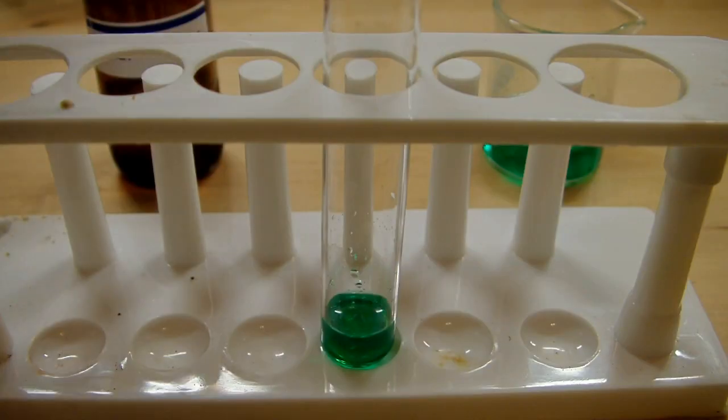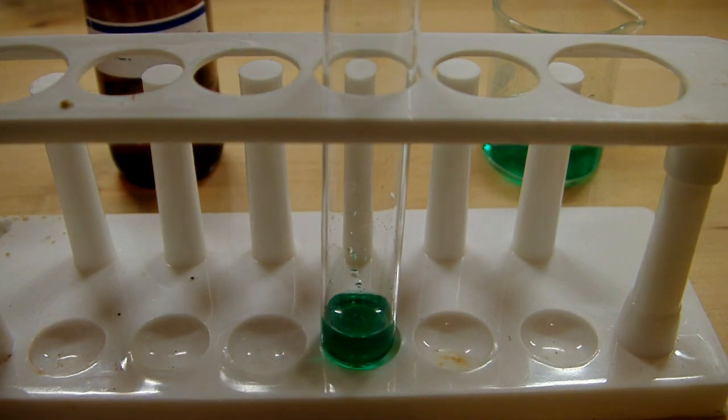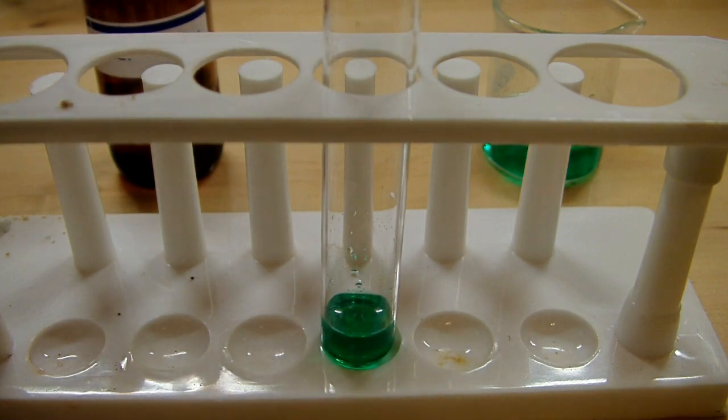I've transferred two milliliters of the solution into a test tube, and now I'm going to add the concentrated ammonia. As you can see, there's a nice emerald green color, and when we add the ammonia, we should see a series of pretty beautiful color changes. So I'll add this one milliliter at a time.